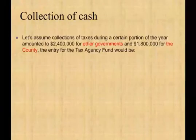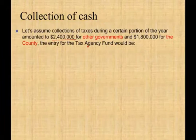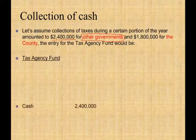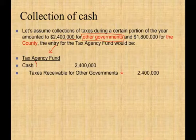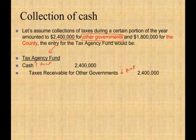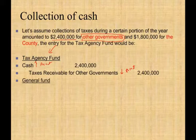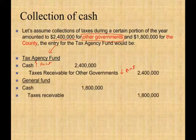Let's assume collection of taxes during the year amounted to $2.4 million for the other governments — the school district and village — and $1.8 million for the county. In the tax agency fund, we record the $2.4 million: debit cash $2.4 million, credit taxes receivable for other government $2.4 million. We increased one asset and reduced another — assets still equal liabilities. For the general fund, we debit cash $1.8 million and credit receivable $1.8 million, because we collected $1.8 million on our own behalf.